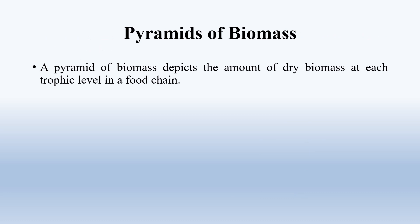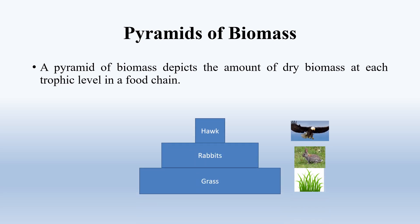Another way of depicting ecological pyramids is through the pyramid of biomass, which depicts the amount of dry weight at each trophic level in a food chain. Grasses as producers will have the maximum biomass, followed by primary consumers such as rabbits with a little less biomass, and finally the higher-level consumers feeding on the rabbits would have even lesser biomass.